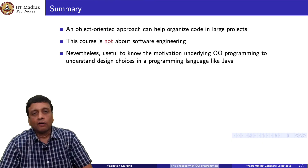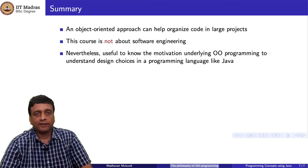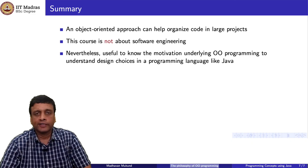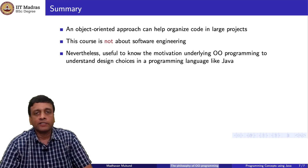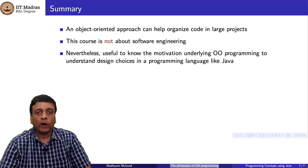To summarize: we want to understand the motivation for object-oriented programming because that will drive our understanding of how a language like Java has been designed. The purpose of this course is not to teach how to build systems using object-oriented programming — this is not a software engineering course, it is a course about programming languages and programming language design. Through Java we will illustrate various features, and because Java is object-oriented many of these features will be tied to object-oriented programming. It is good to understand why object-oriented programming is useful, because otherwise some design decisions and features available in the language do not really make sense.